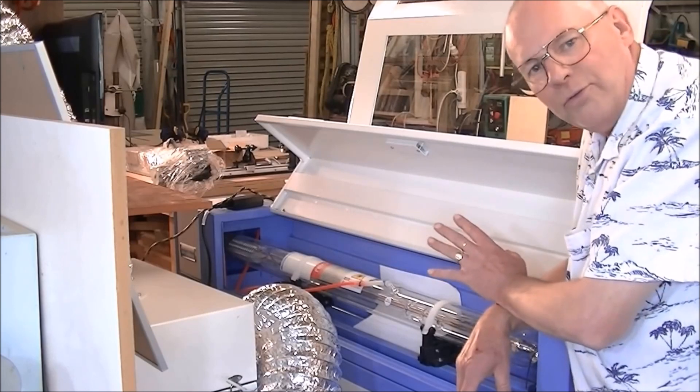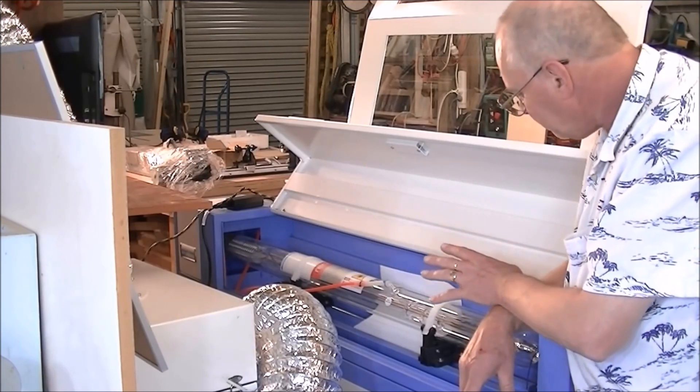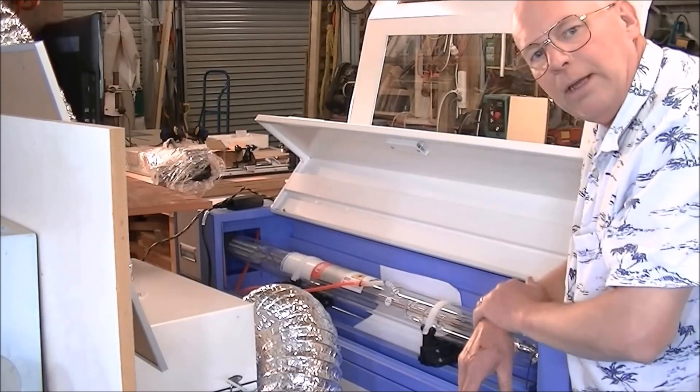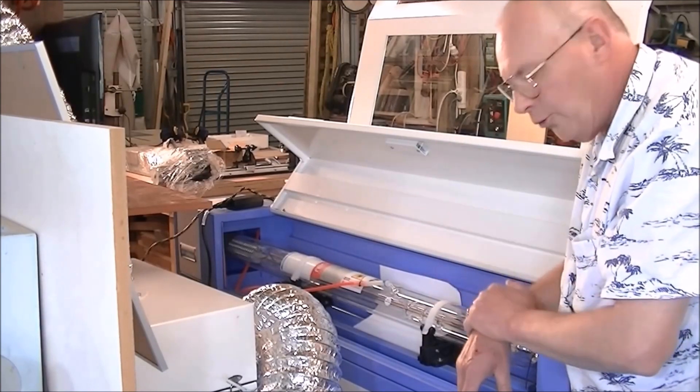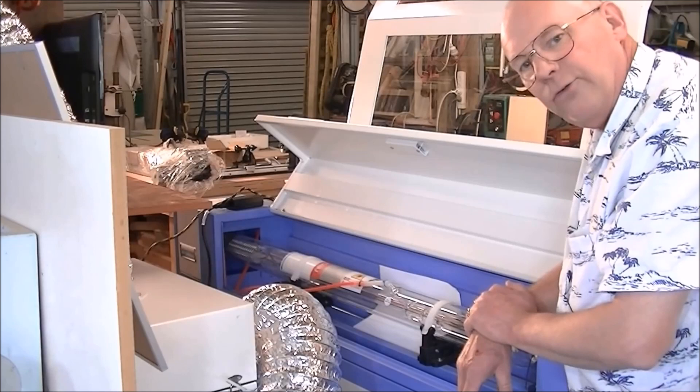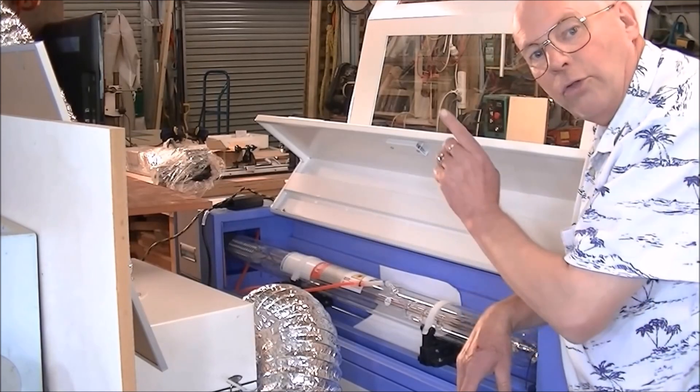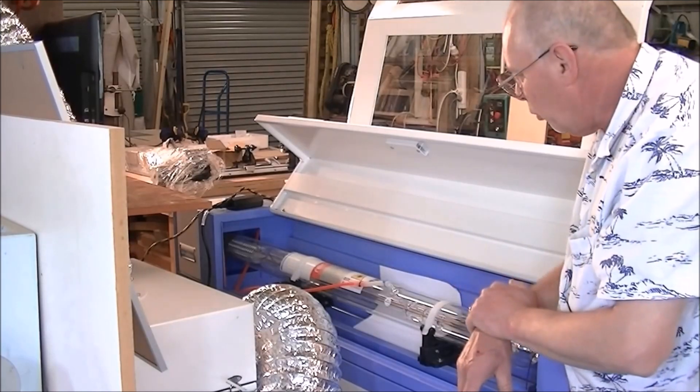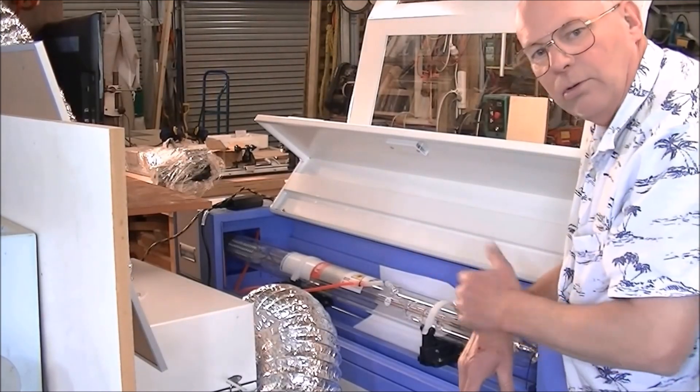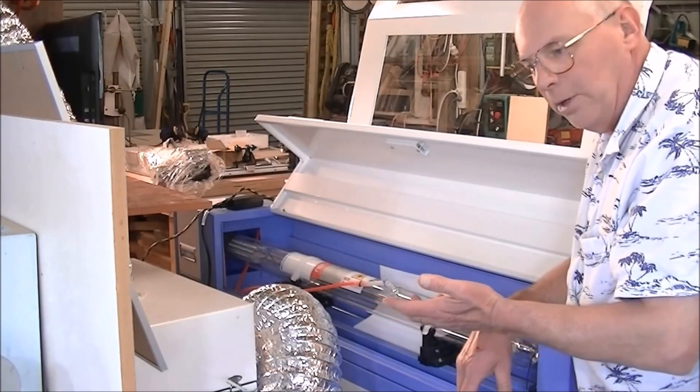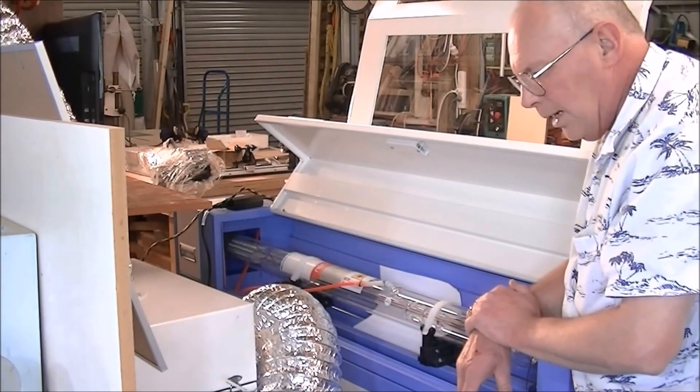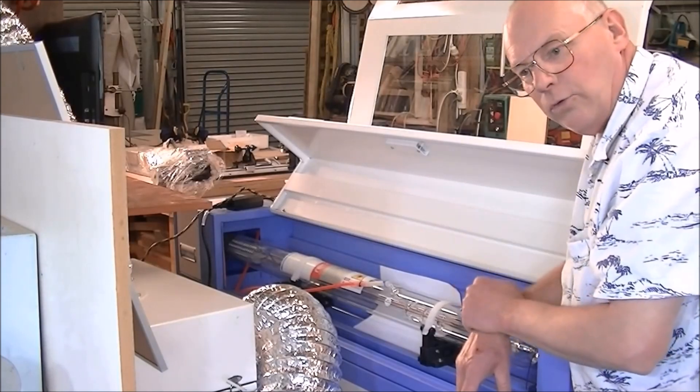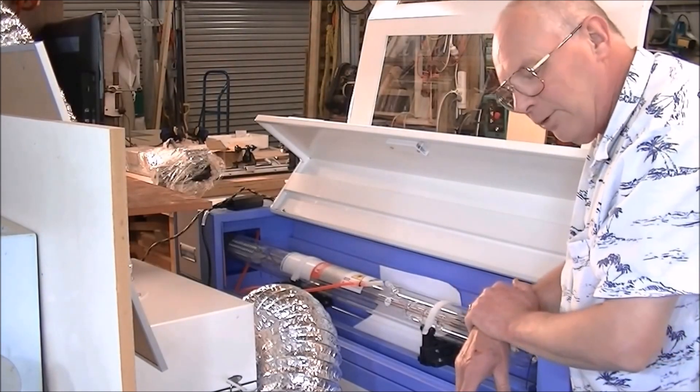What you are doing is what they call overdriving the tube. A lot of the manufacturers sell their machines on the peak output of the tube. So if you buy a machine with a 60 watt tube in it, it may when it was new produce 60 watts peak output, but in fact it's actually a 45 or 46 watt tube.